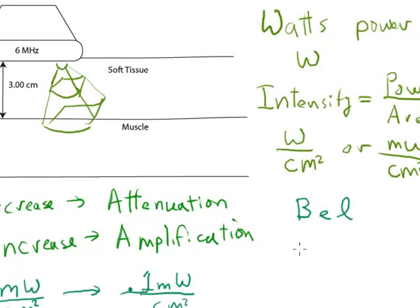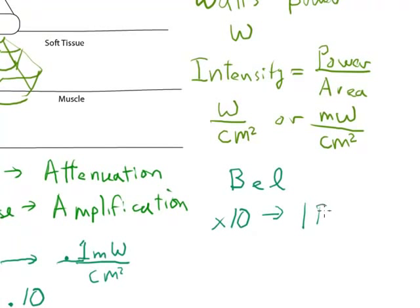And every time you have a tenfold increase in the signal, if it's 10 times bigger, that's said to be a 1 bell increase, plus 1 bell. If it's 10 times smaller, or divide by 10, that's equal to a minus 1 bell change in the intensity of the sound.